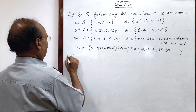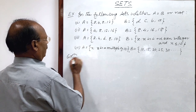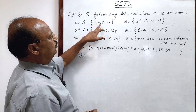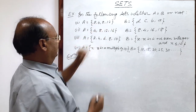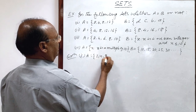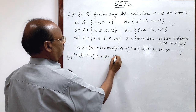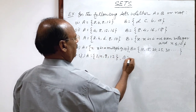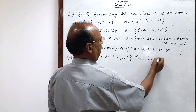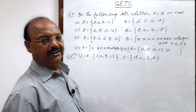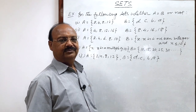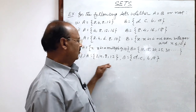Let us see the first part. Here A has elements 2, 4, 8 and 12, and set B has elements D, C, B, A. What do you think? Whether these two sets are equal or not? No, these two sets are not equal.